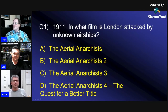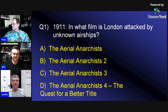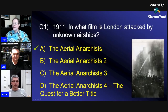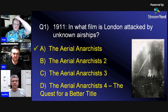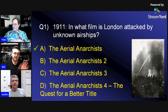1911 — in what film is London attacked by unknown airships? As Jeff was saying, he thinks he's seen this — but it's a lost movie, and it's a silent movie, so he couldn't have heard it on tape. Jeff Rowe's got super hearing. Yes, Jeff Rowe was right — it was the Aerial Anarchists, the first one. Apparently London is bombed by unknown invaders with airships. They hadn't even thought of sequels at this point.